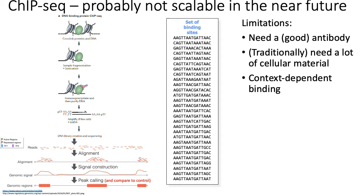ChIP-seq is a super popular way of measuring TF-DNA interactions in vivo. It has a number of limitations, namely that this whole procedure basically relies on your ability to make or buy a highly specific antibody that is both specific and efficient at capturing your transcription factor of interest. Traditionally, you typically needed a lot of IP DNA, so you typically need to perform ChIP-seq on like millions of cells in order to get enough genomic sequence bound by your TF of interest for ChIP-seq to work.